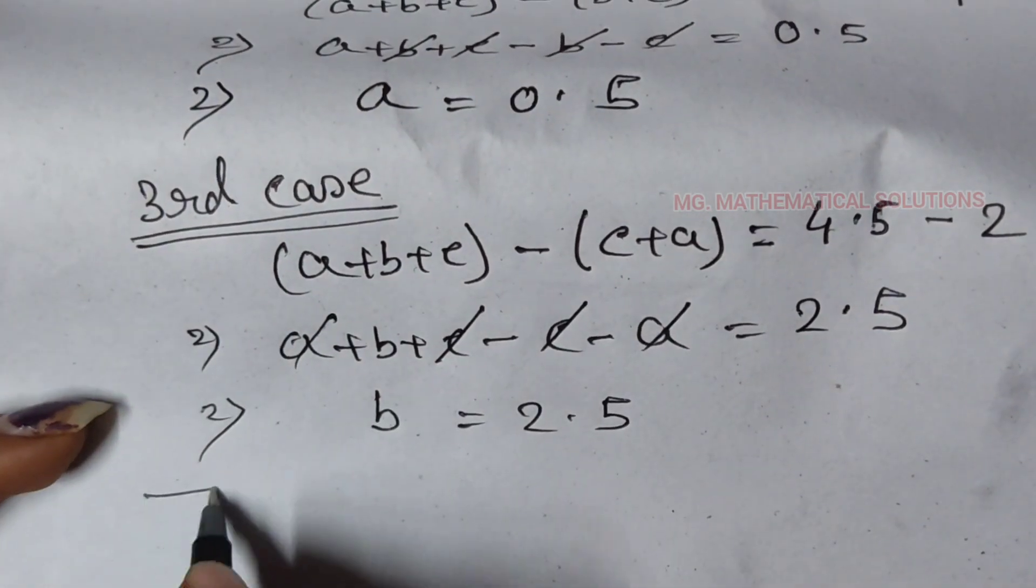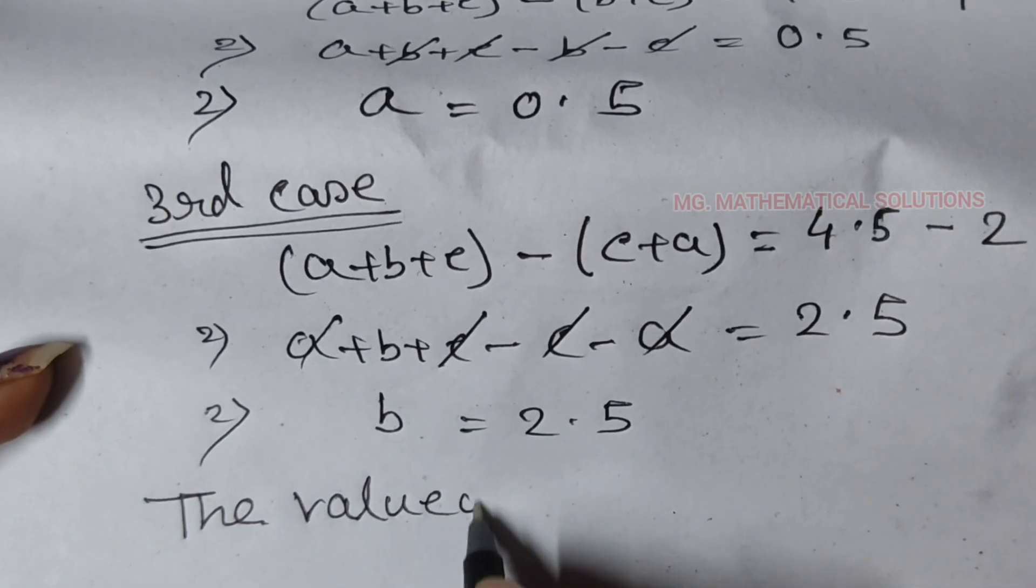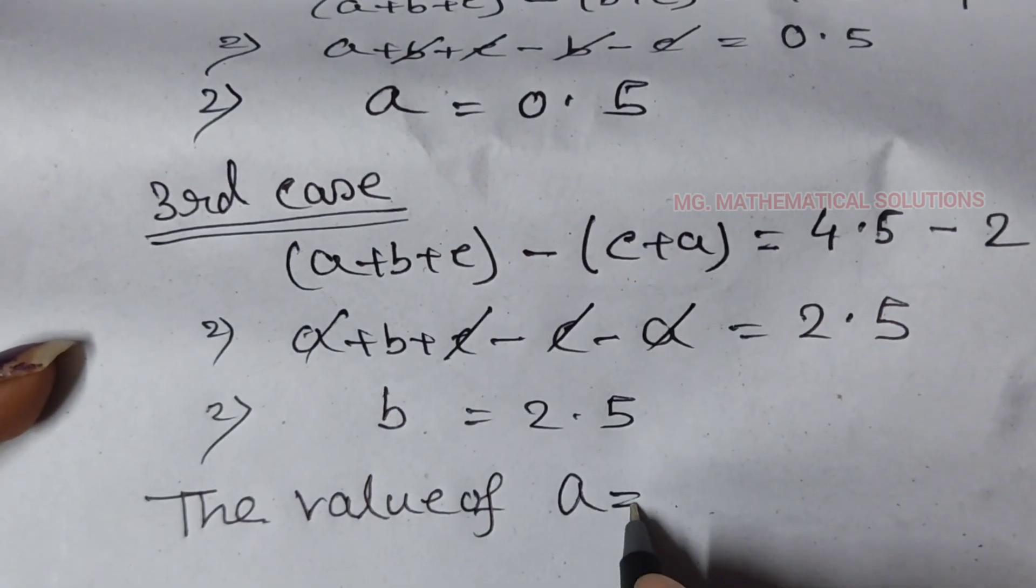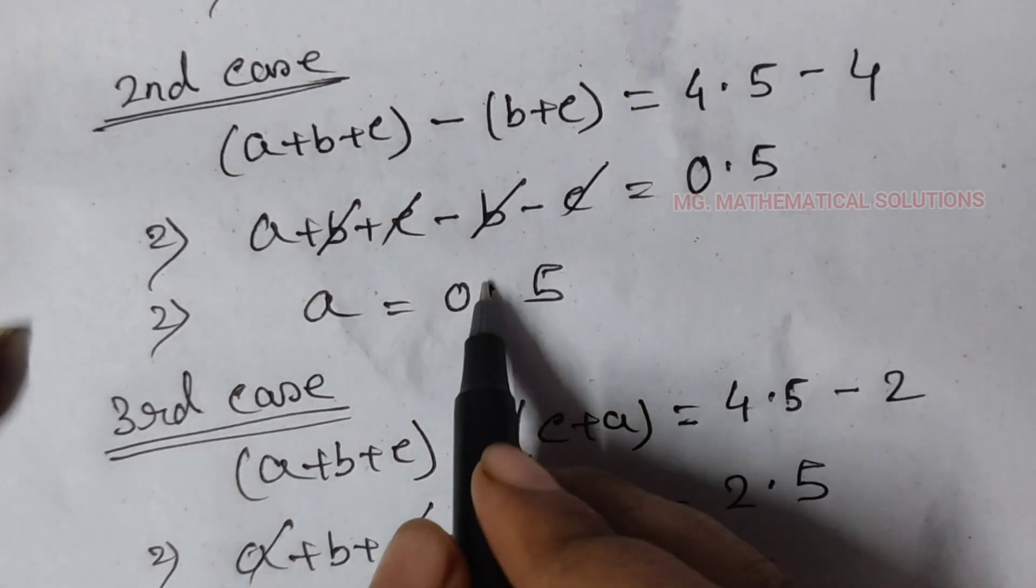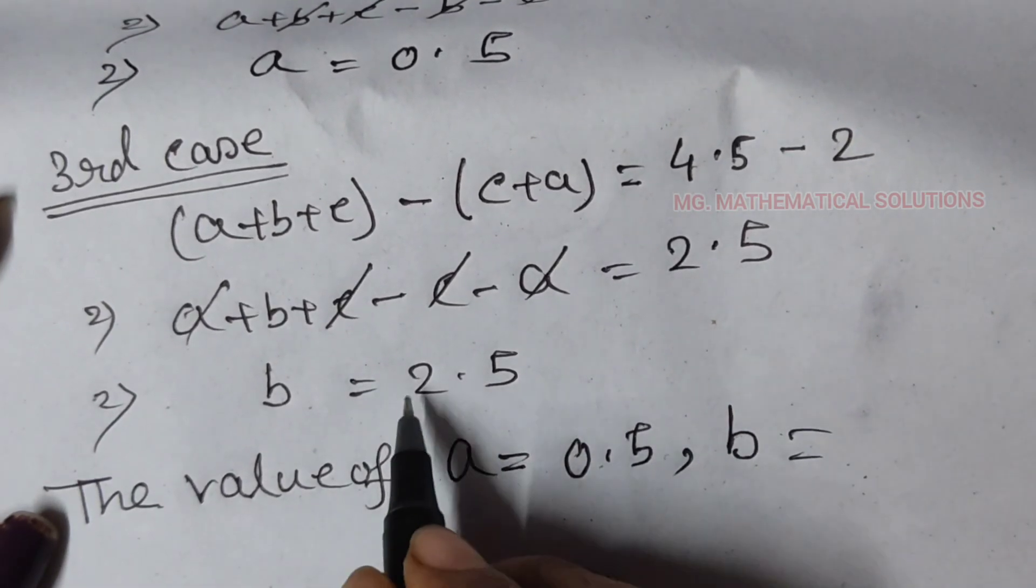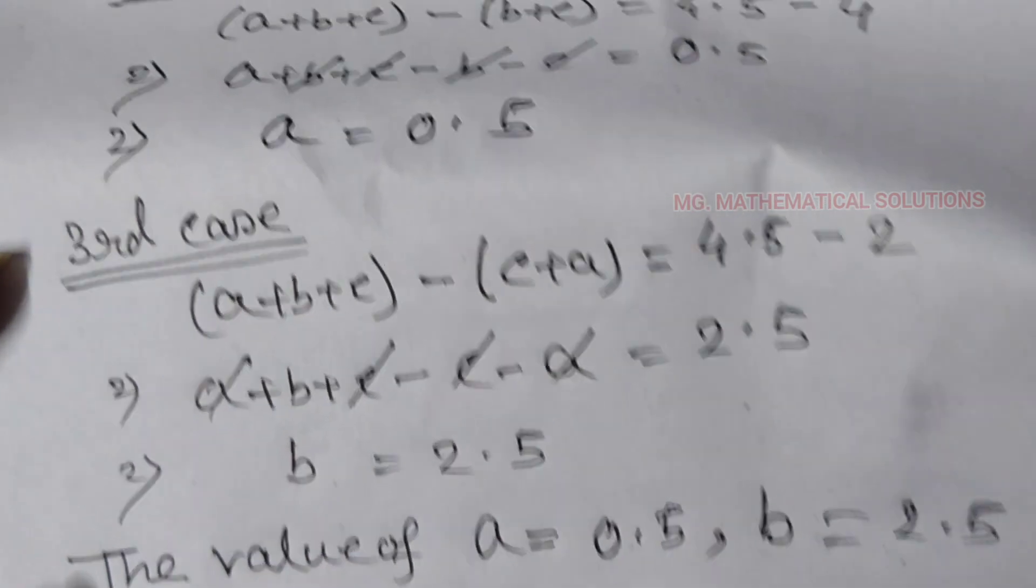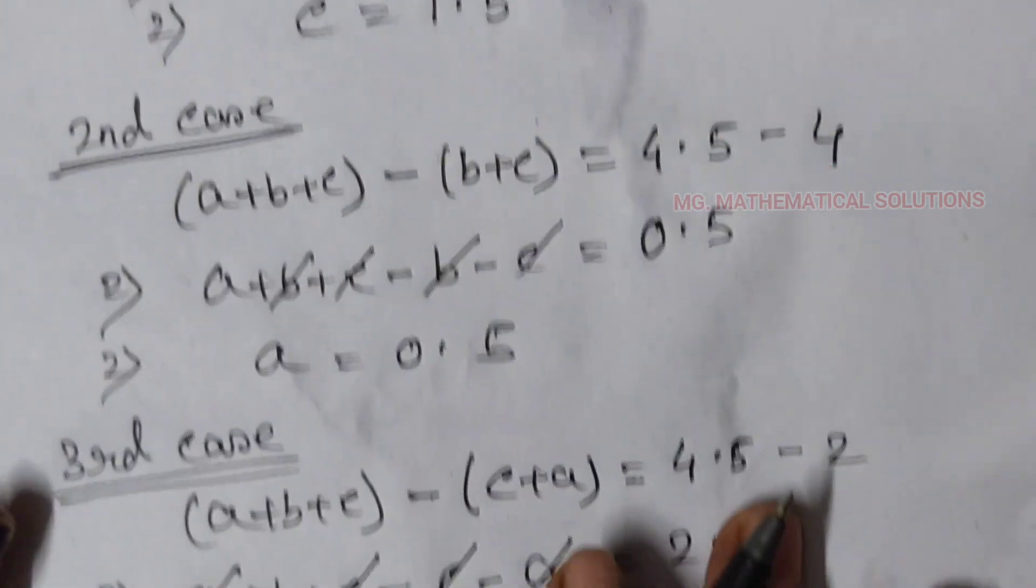Then we got the value of a equal to 0.5, b equal to 2.5, and c equal to 1.5.